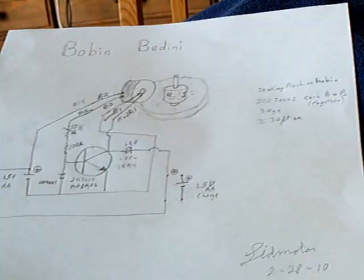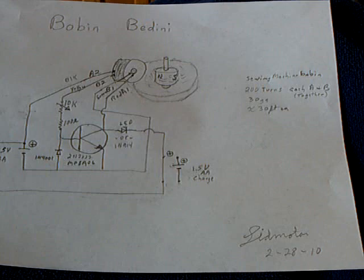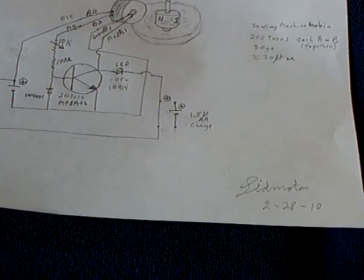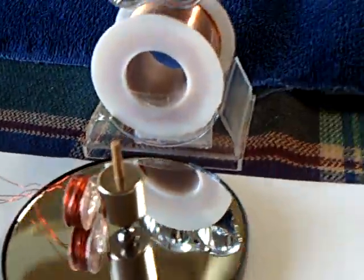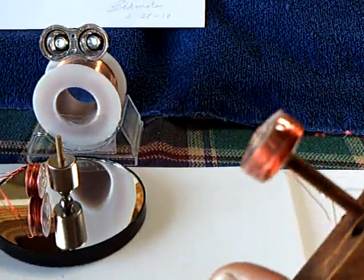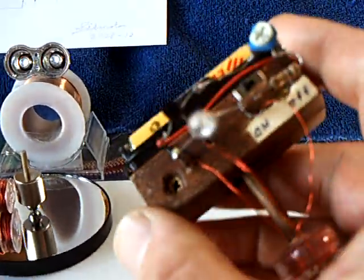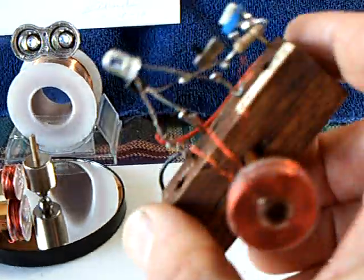I just want to share that with people. This is the latest thing I've been fiddling with. It's this bobbin Bedini, and that's just a sewing machine bobbin. All that is is a sewing machine bobbin wound by Filer, and once you get that coil, you can make lots of different circuits with it.